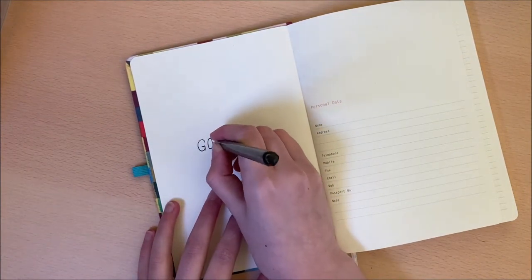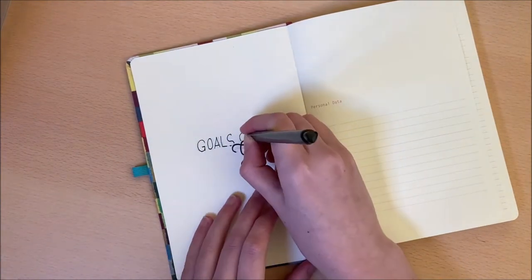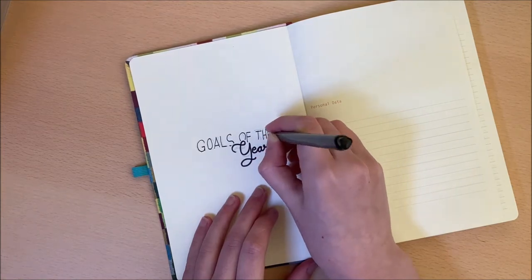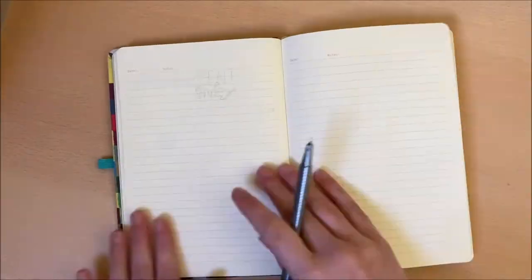On the other side of my 2021 spread I like to include my goals of the year. I usually try to limit this to four or five different goals that I want to complete throughout 2021.